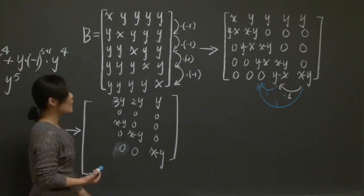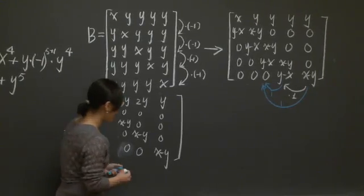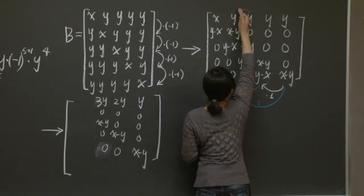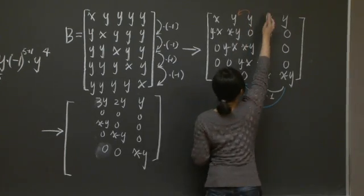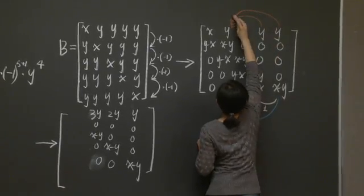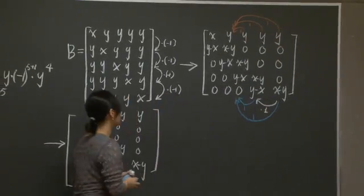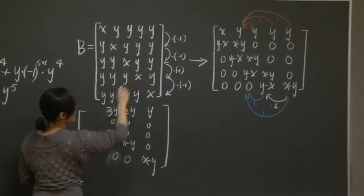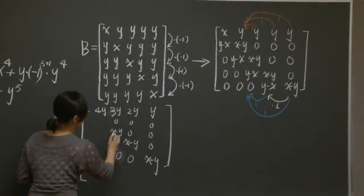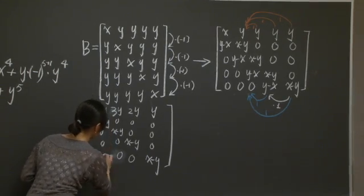What do you do with the second column? This time you will have to add a copy of the third column, a copy of the fourth column, and a copy of the fifth column. So you update the second column to be 4y, x minus y, 0, 0, 0.